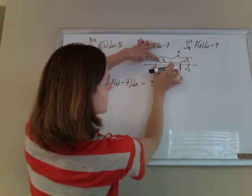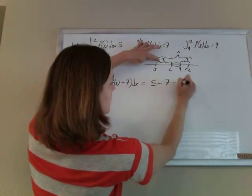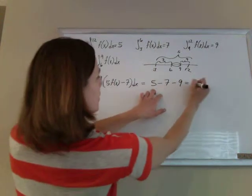Minus this piece and that piece. So minus the 7 and minus the 9, and that's going to give you a negative 11.